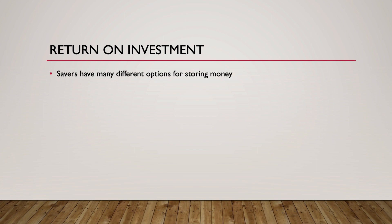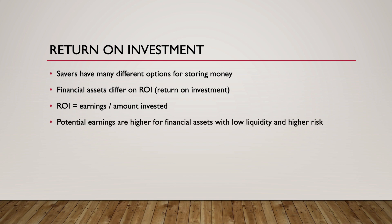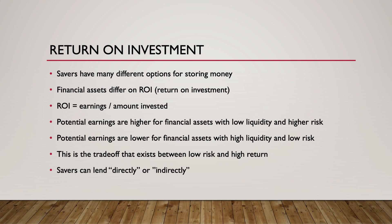Savers have many different options when it comes to where to put their money. The primary difference among the many types of financial assets available is the return on investment, or ROI. Return on investment is the earnings, such as interest or capital gains, that a saver receives for making funds available to others. It is calculated as earnings divided by the amount invested. There is an inverse relationship between ROI and liquidity and safety. Potential earnings are higher for financial assets with low liquidity and high risk, whereas potential earnings are much lower for safer financial assets with high liquidity. Savers can invest directly in businesses by purchasing a bond or shares of stock from a firm, or indirectly by providing funds to a bank or mutual fund that channels those funds to borrowers.